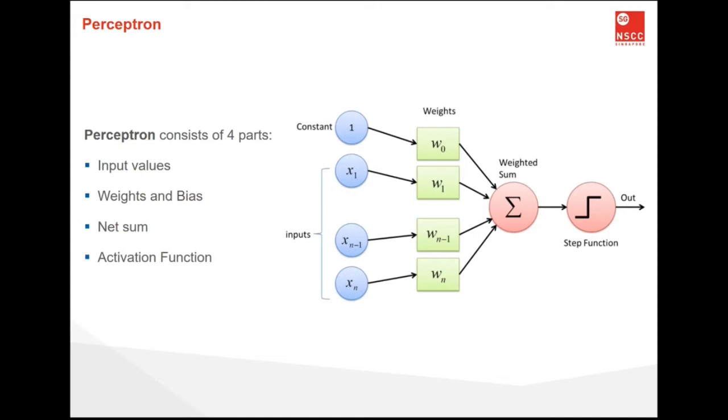How about weights and bias? Weight shows the strength of a particular input, and bias allows us to shift the activation function curve up and down.